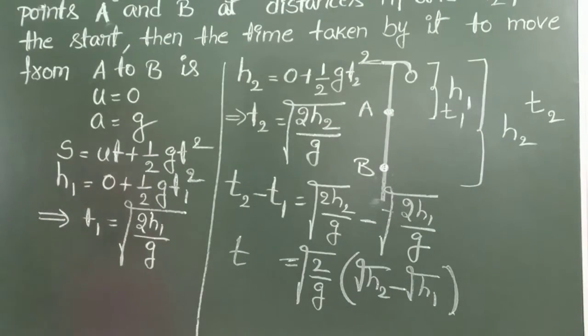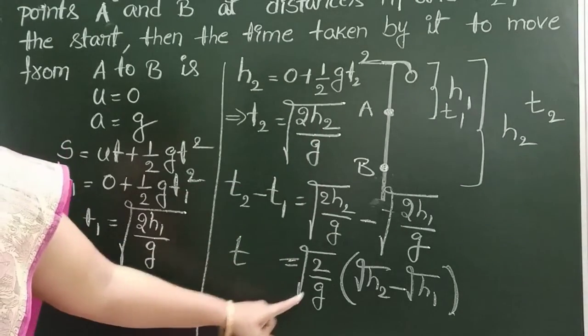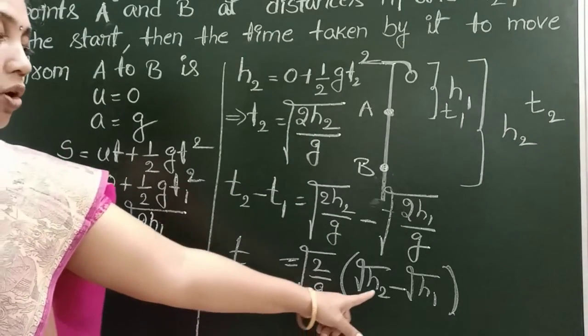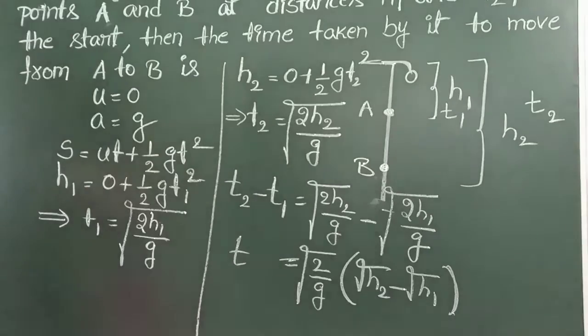So the time taken to reach from A to B is square root of 2 by g into root H2 minus root H1.